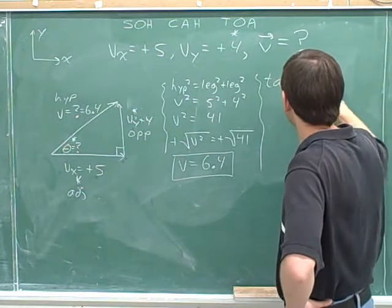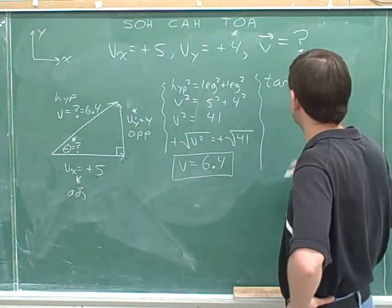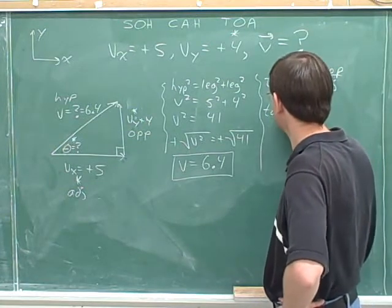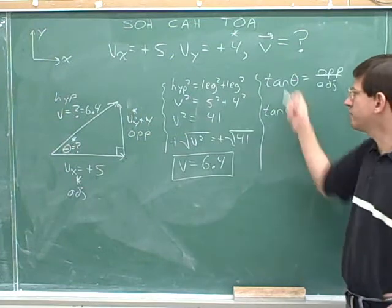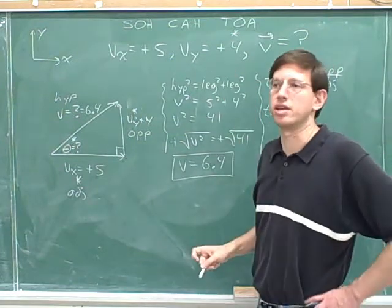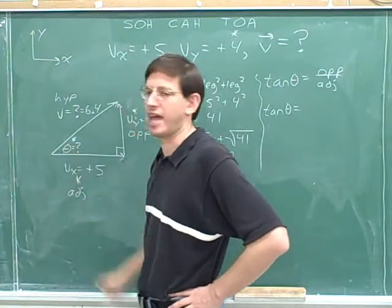We know that the tangent of theta is the opposite side divided by the adjacent side. Remember that the symbol theta was not actually mentioned in the original problem. We had to invent that symbol in order to give a name to the angle that we need.